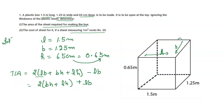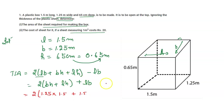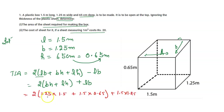Now put in the values. We get 2 into: B is 1.25 multiplied with H is 0.65, plus L is 1.5 multiplied with H is 0.65, plus L is 1.5 multiplied with B is 1.25.